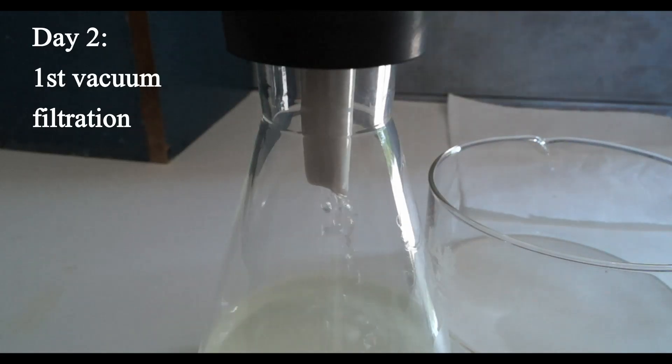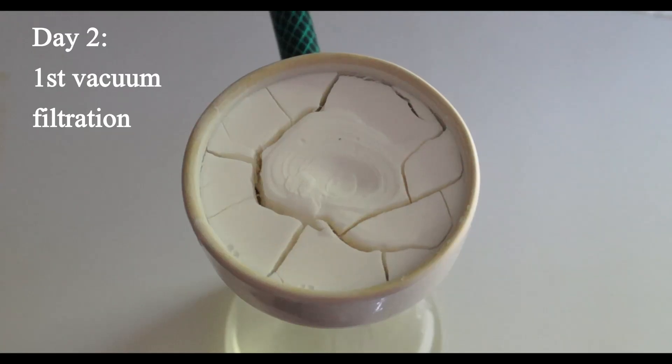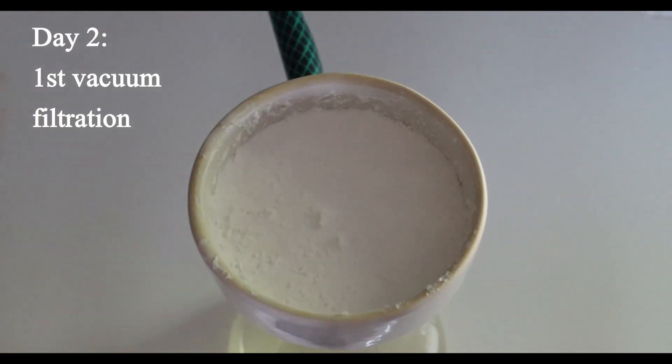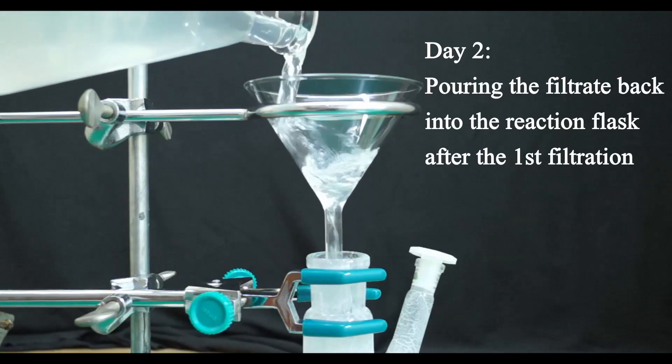On the second day, I started with filtering the reaction mixture prior to adding the next portion of powdered TCCA. This was done for two reasons. First reason. This is an important safety measure against too much unreacted TCCA being present in the reaction mixture at any given time. If some TCCA was left unreacted each time, this could lead to a thermal runaway later when it finally decided to react.